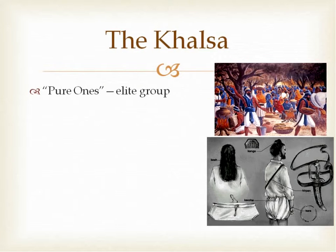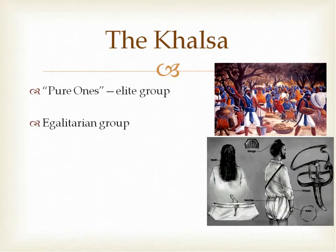There are differences in the stories — some say there were five decapitated goats, the point being whether these people would be willing to come in. Other stories say Gobind Singh had killed them all and then brought them back to life. The idea is he was forming an elite group. Today it is a very egalitarian group — both men and women can join. There are hundreds of rules to be followed, only some of which date back to the time of the tenth guru.